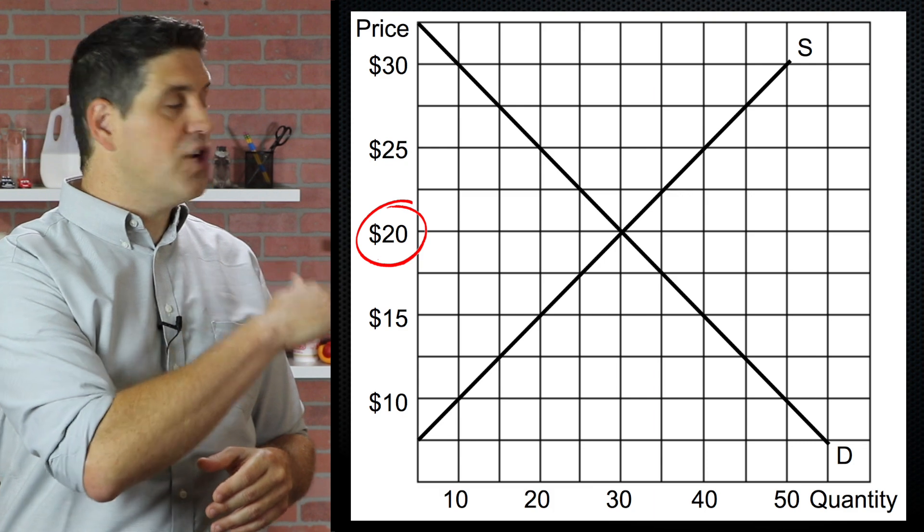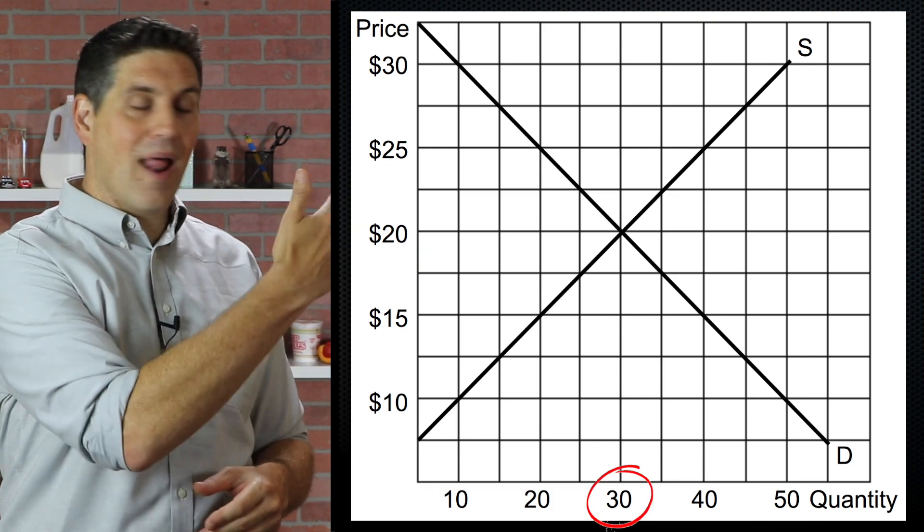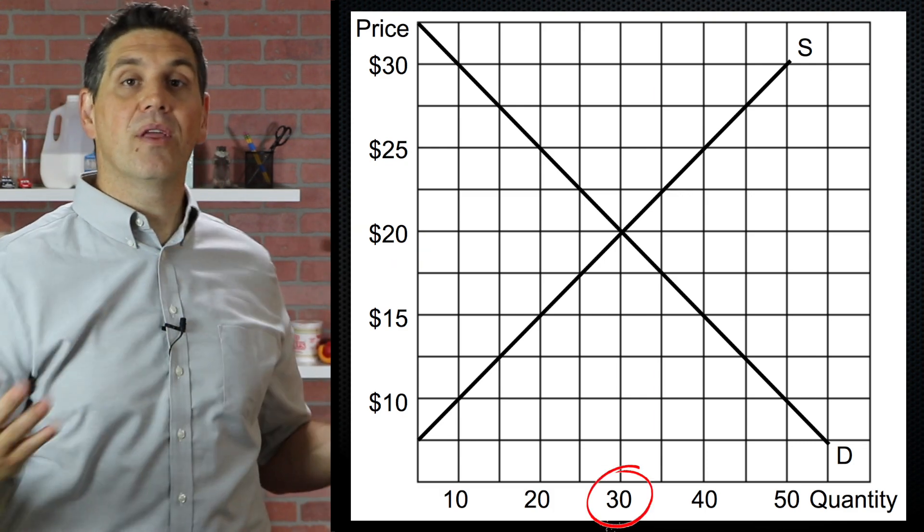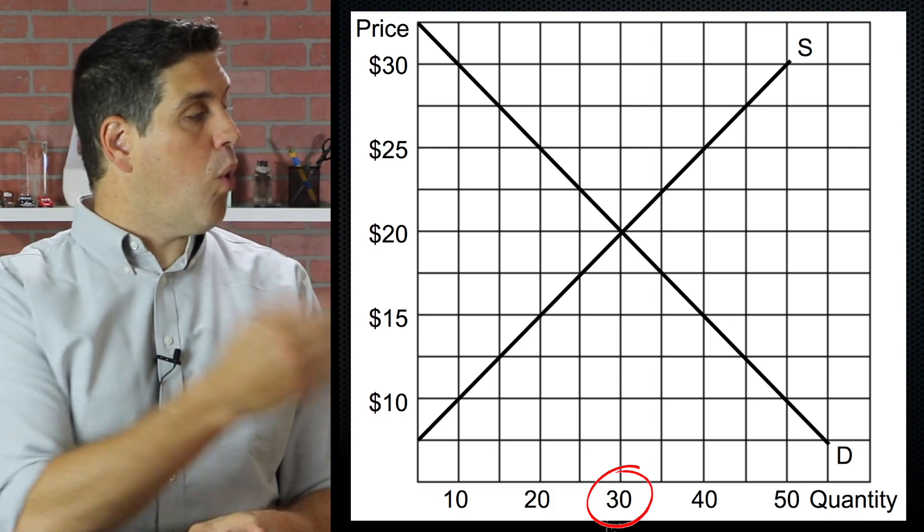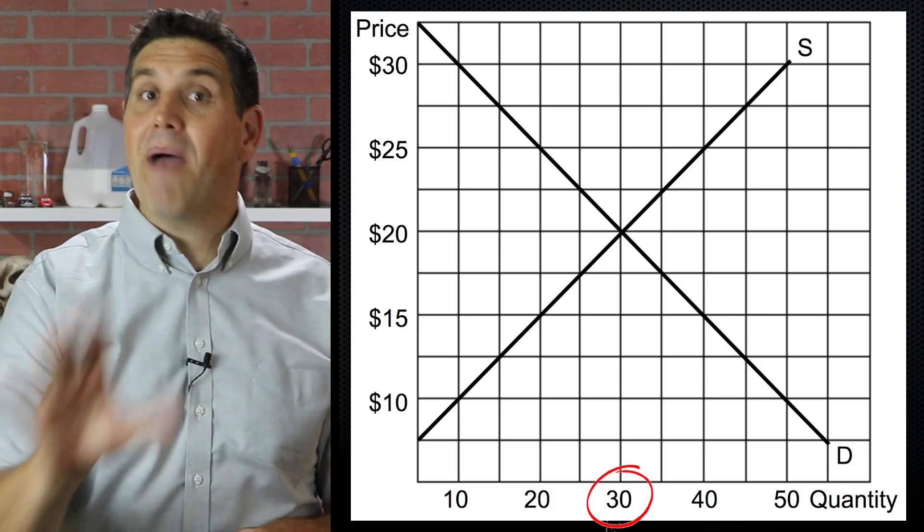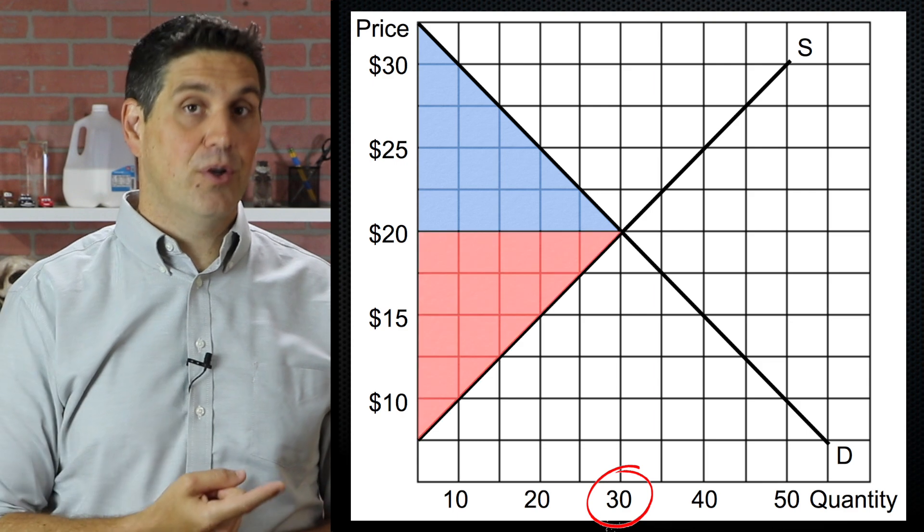Let's just assume the equilibrium price of chickens is $20, and the quantity that we're going to have produced in the market is 30 million chickens. That's the socially optimal quantity where there's no deadweight loss, and we've maximized consumer surplus and producer surplus.